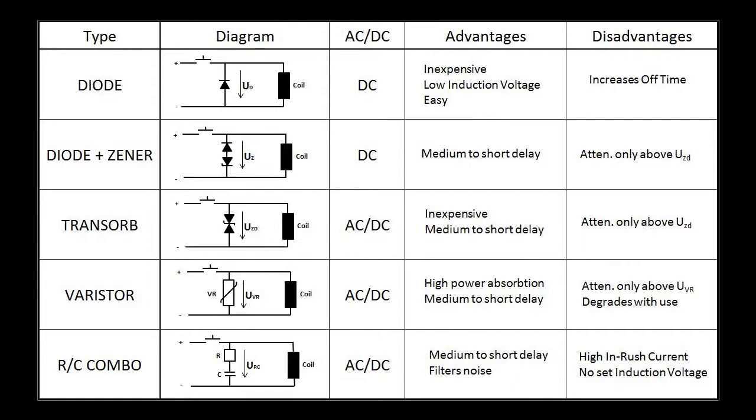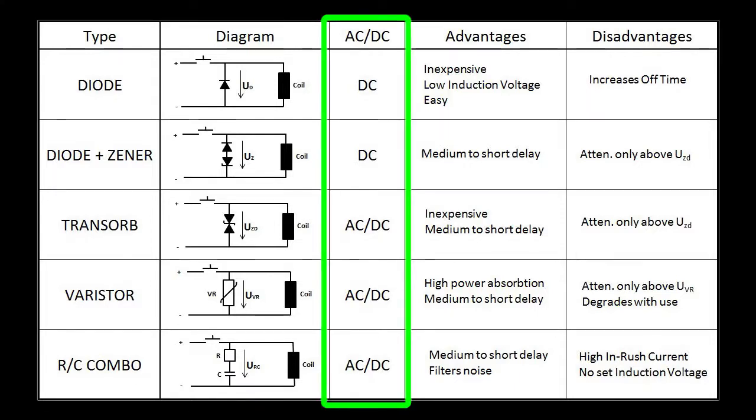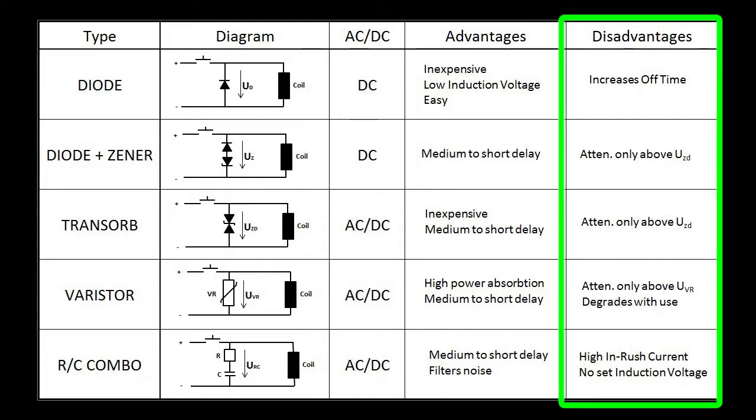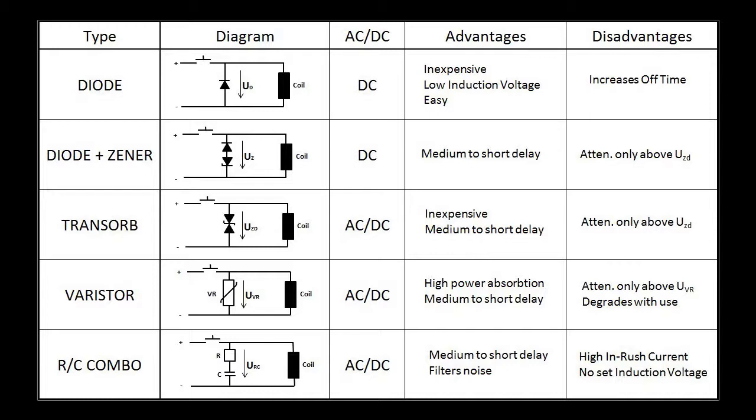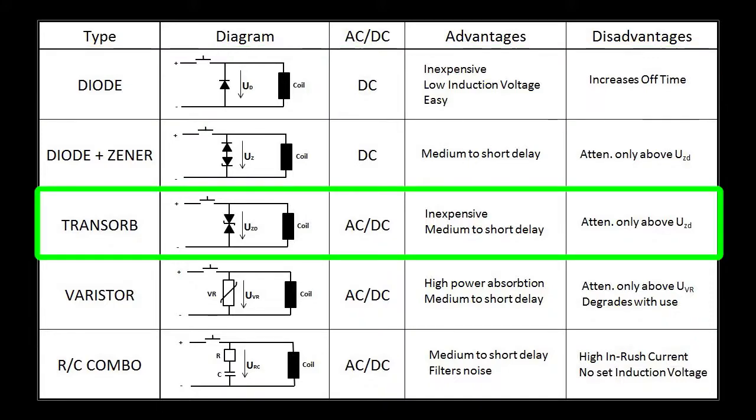This table shows you at a glance the various kinds of SPDs available, if they work for AC or DC coils and some of the advantages and disadvantages of each. In general, you'll find that for DC coils, your best bet is going to be a simple diode type surge suppressor. For AC coils, your best bet is usually going to be a transorb.